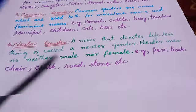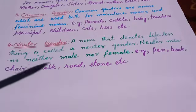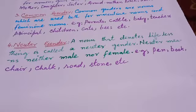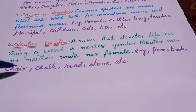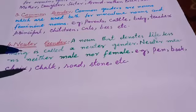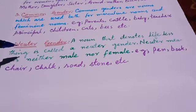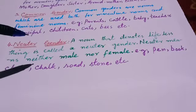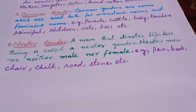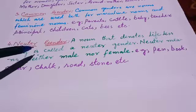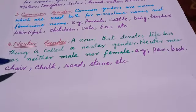For example: pen — جیسے کہ میرے ہاتھ میں آپ دیکھ رہے ہیں — اس کو ہم نہ مذکر بول سکتے ہیں نہ مونث۔ اسی طرح book، chair، chalk، road، stone، etc. — یہ بے جان چیزیں ہیں، ان کو neuter gender بولتے ہیں۔